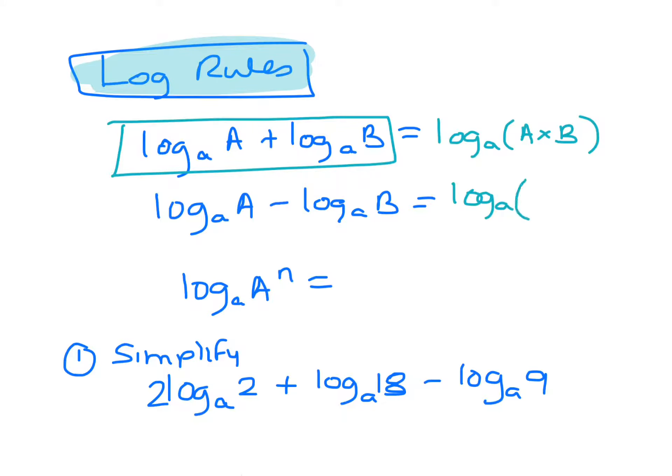When you're subtracting them, that means you're subtracting the indices, so you must be dividing. So when you're adding indices you're multiplying the numbers, but when you're subtracting indices you're dividing the numbers.